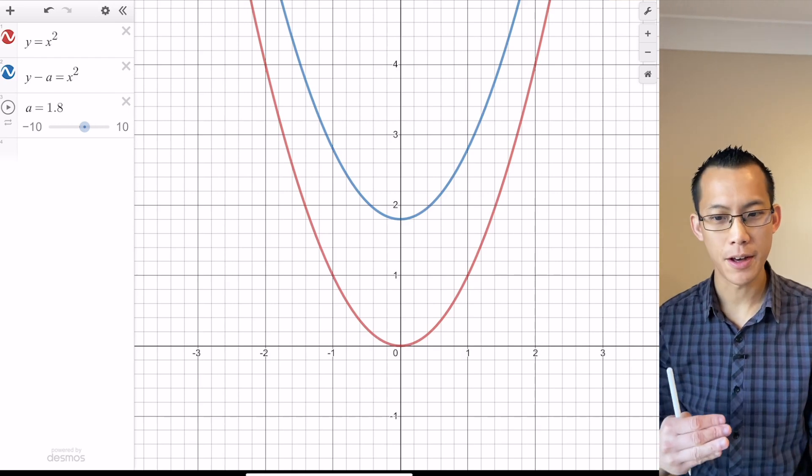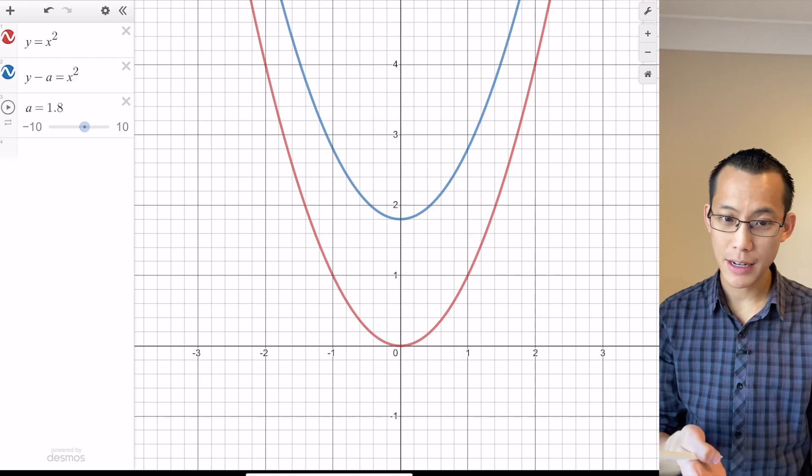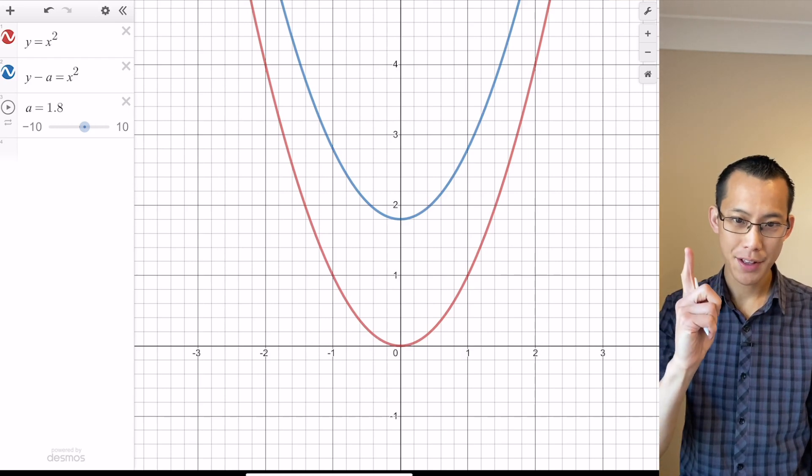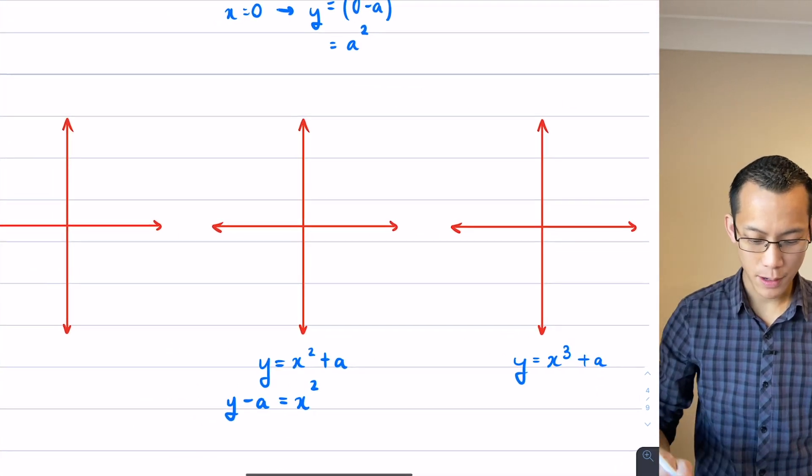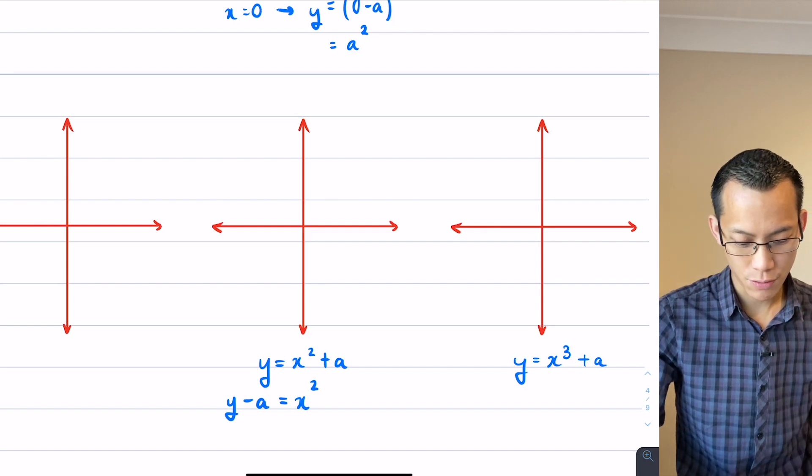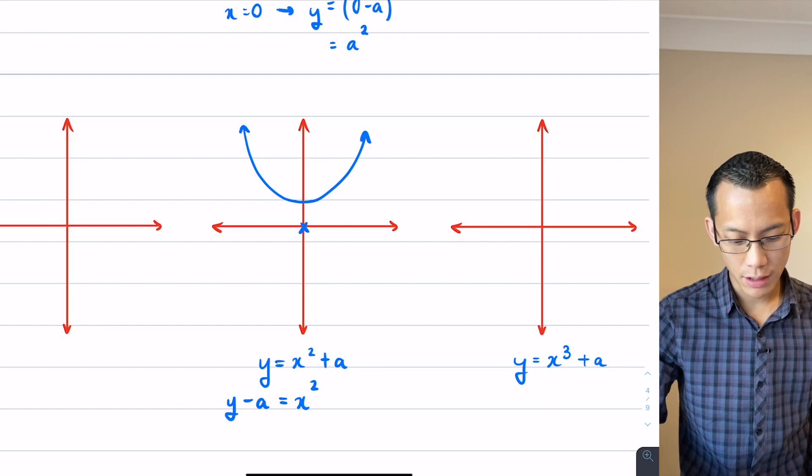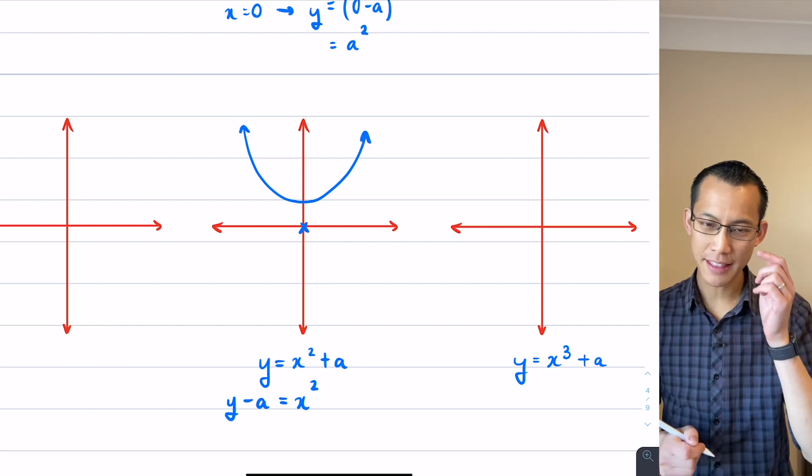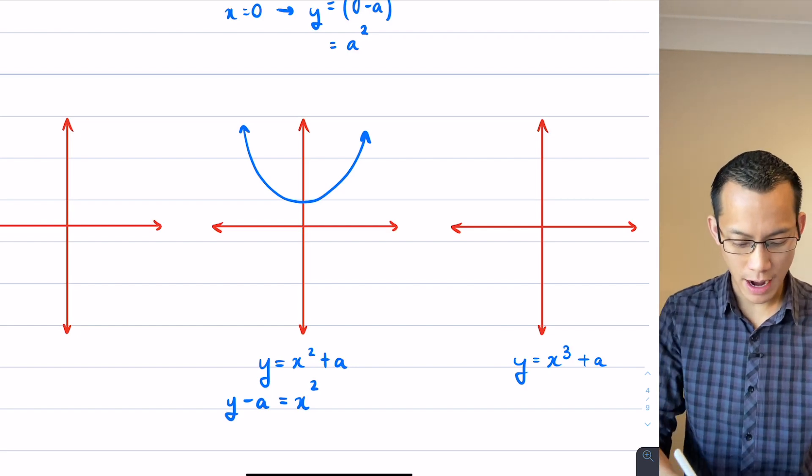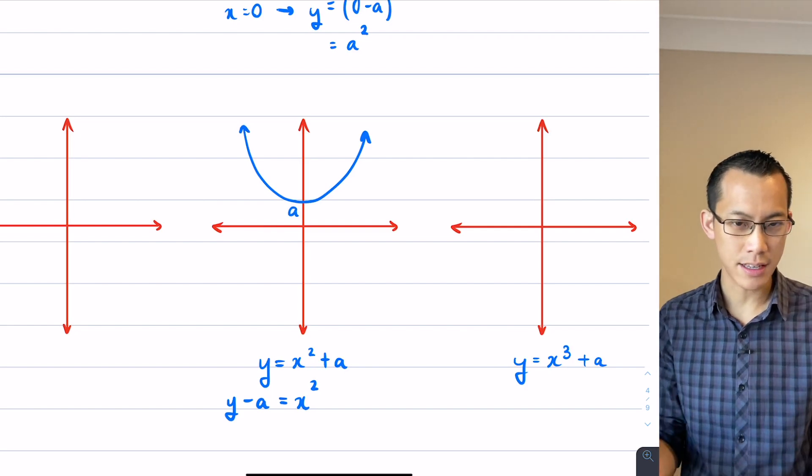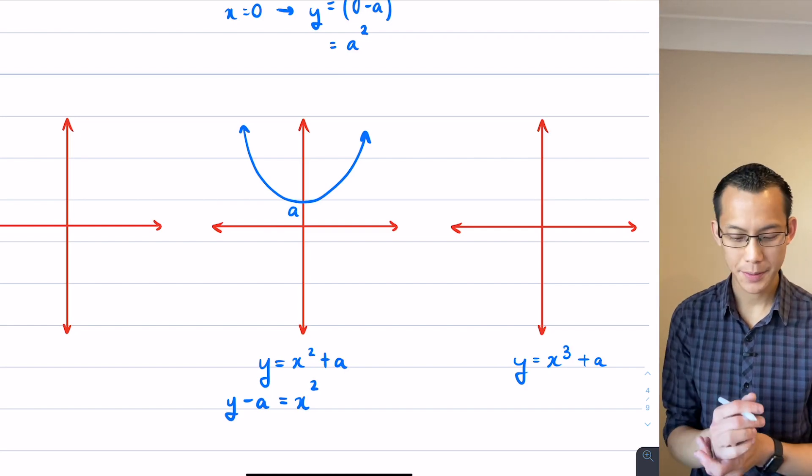The blue graph is the new one, the red one is the old one. So what's happening here, we've moved up A units in the positive direction. So I'm going to go ahead and I'm going to draw that parabola that I saw before. It's no longer intersecting down there at the origin. It's going to be all the way up at A, which in the case that we just drew was 1.8.